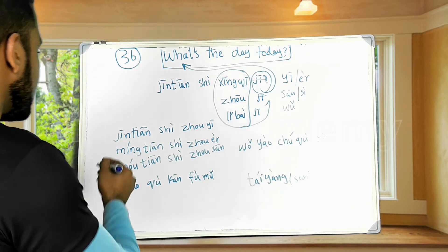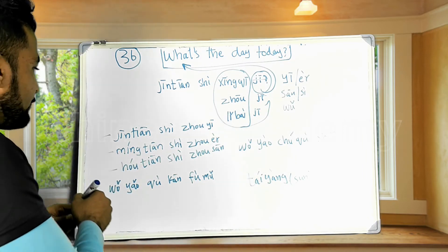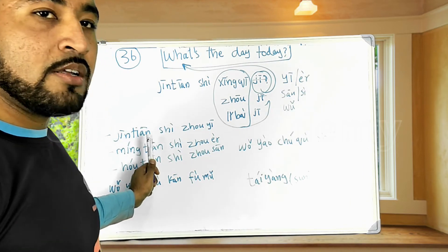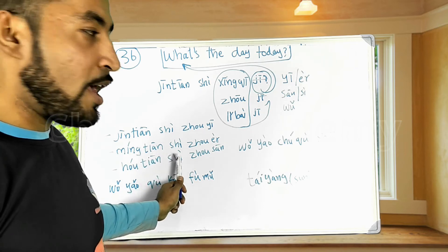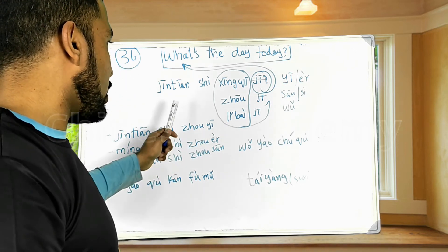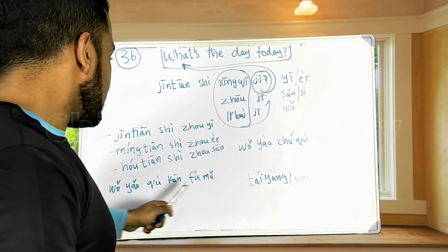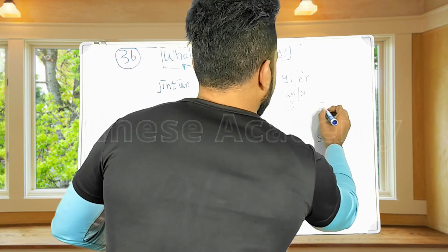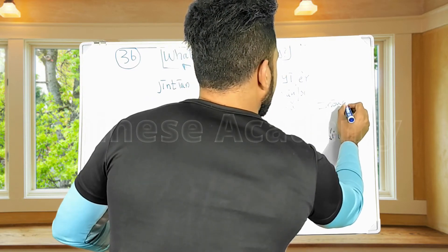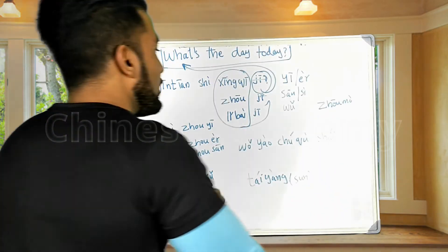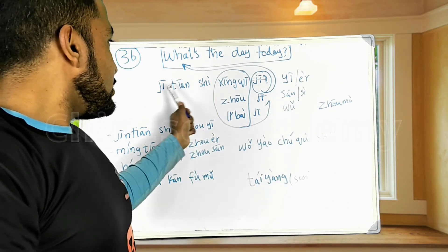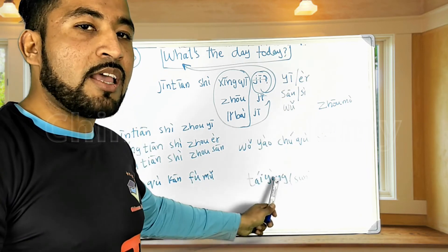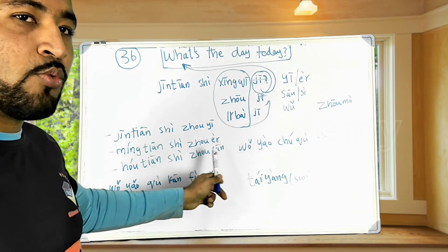To summarize: 今天 (jīntiān) means today, 明天 (míngtiān) means tomorrow, and 后天 (hòutiān) means day after tomorrow. For example: 今天是周一 (today is Monday), 我要出去晒太阳 (I want to go outside to bask in the sun), 今天是周末 (today is weekend).